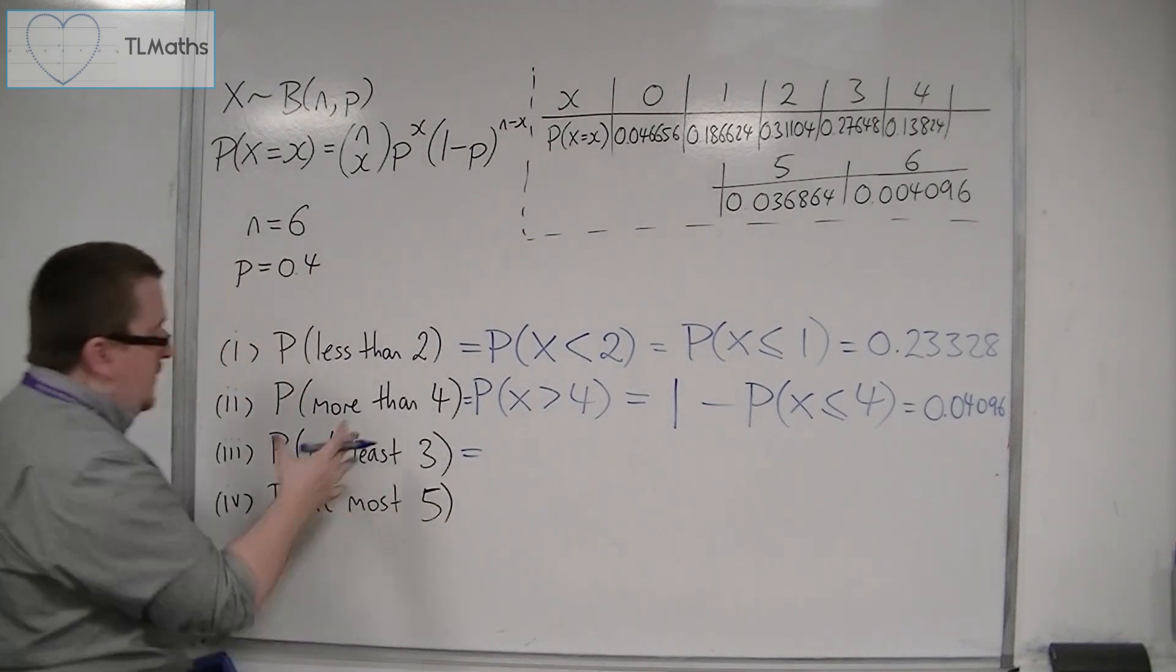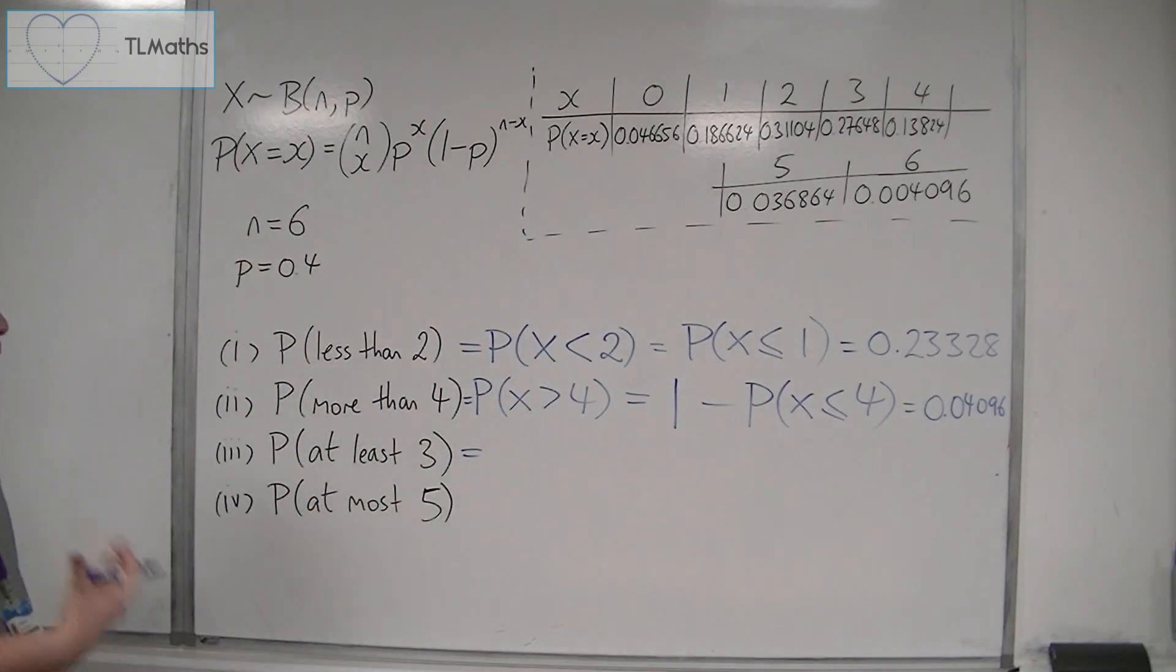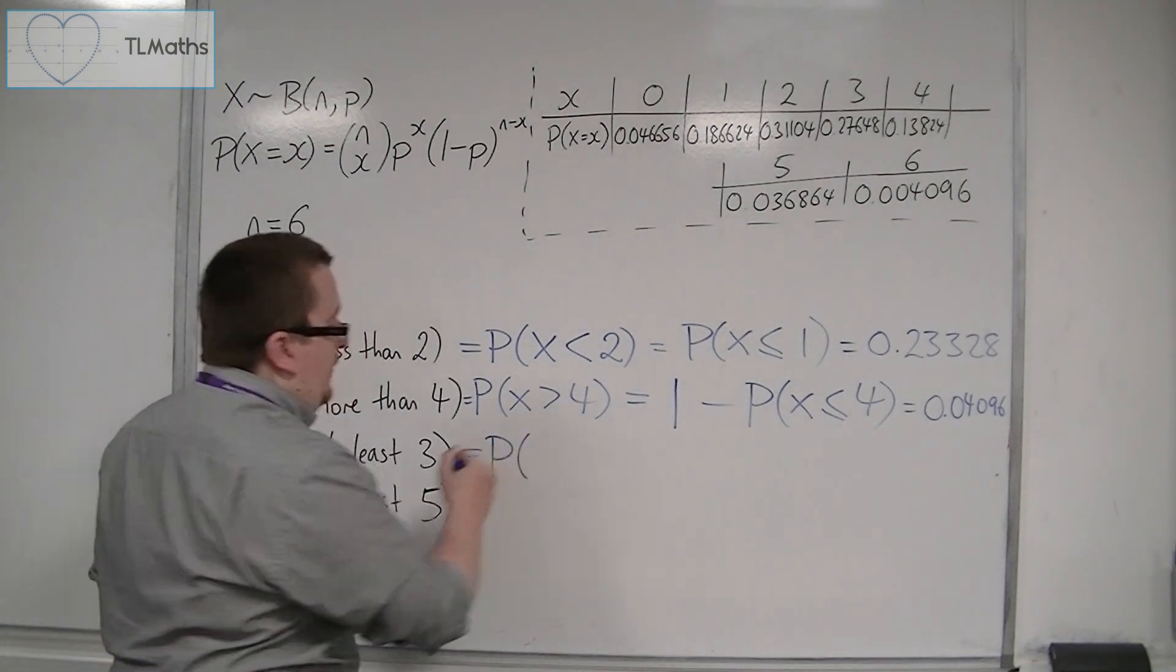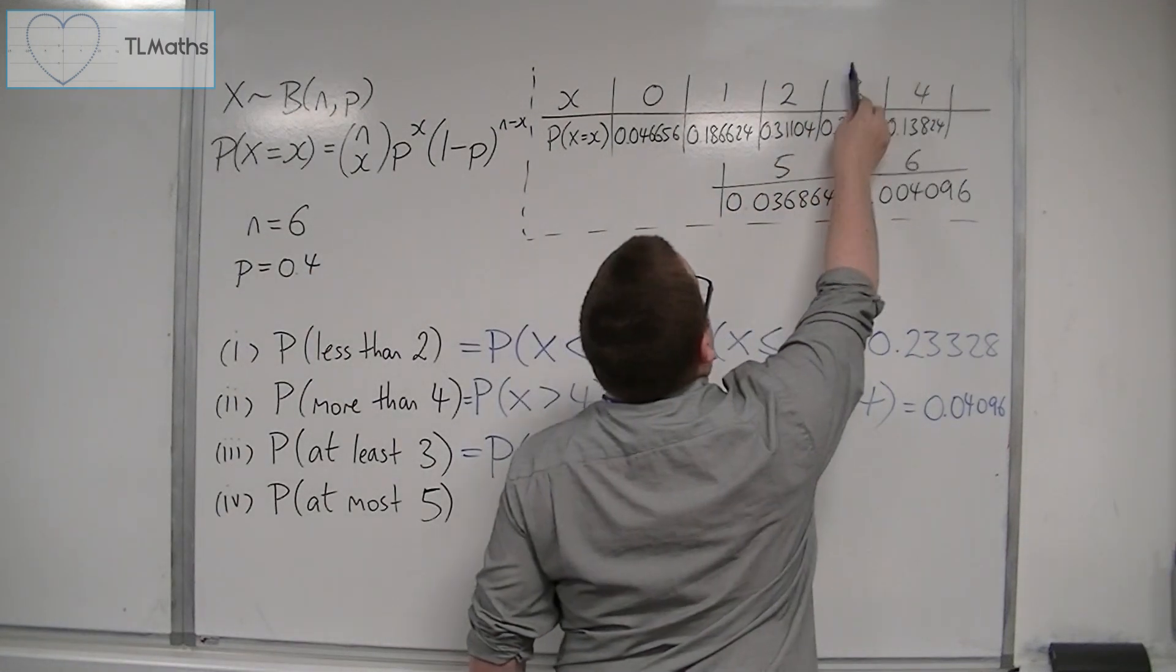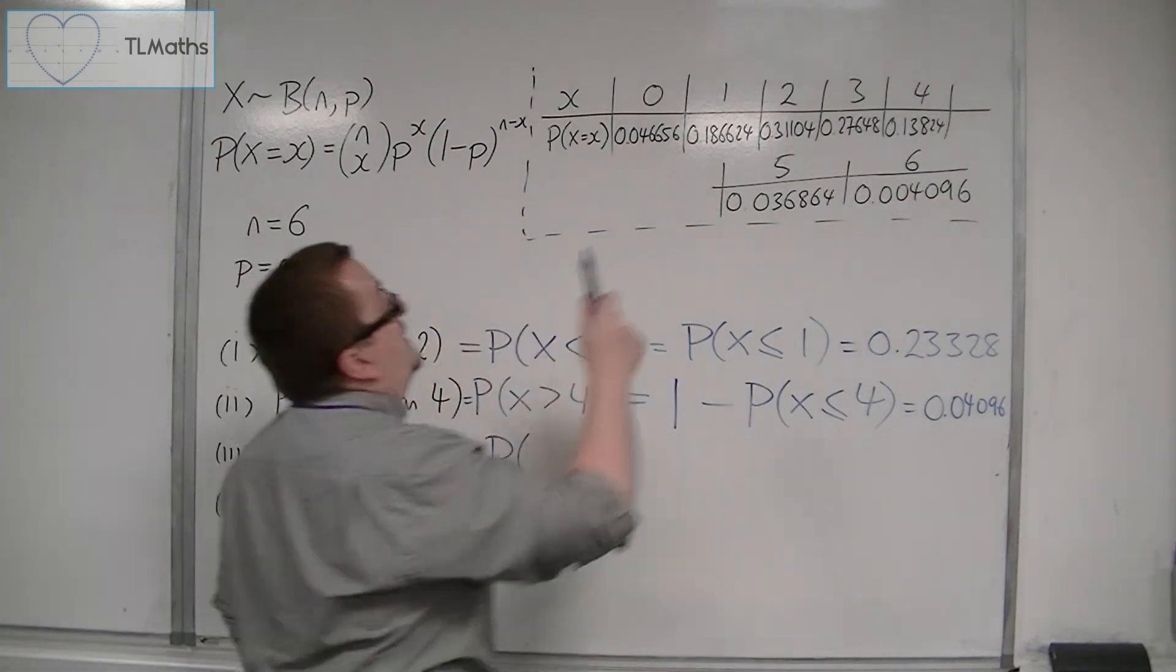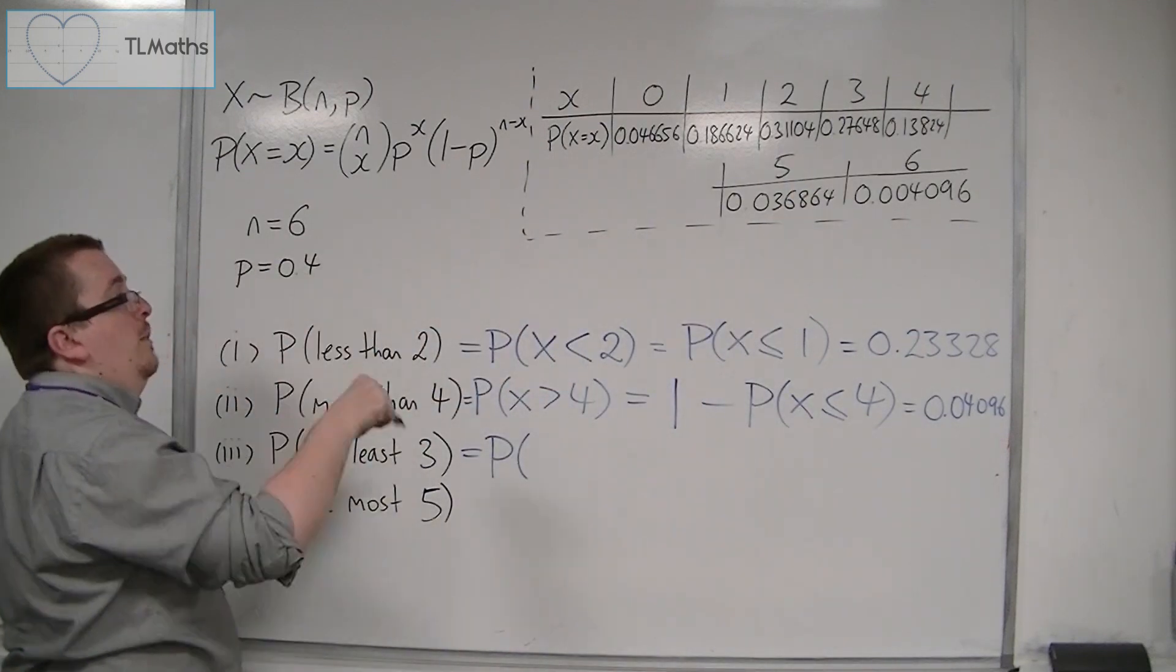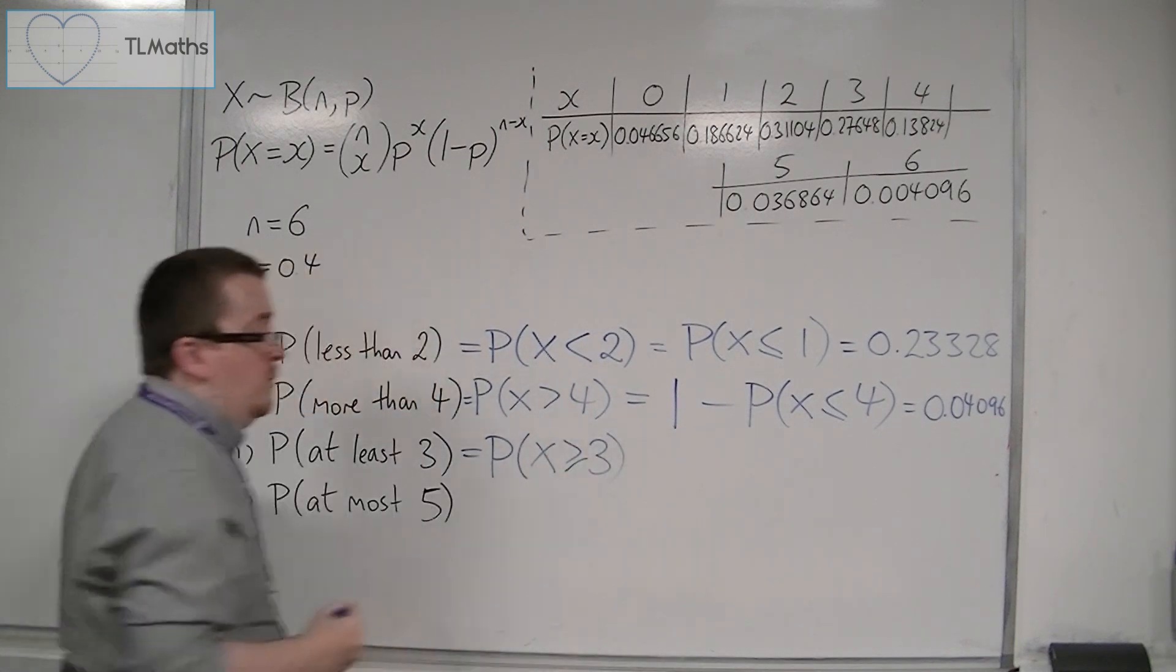Then we get on to these problems where we're talking about at least 3, or at most 5. If you were talking about at least 3, then we want at least 3, and then we can have 4, 5, or 6 as well. So we want nothing that is less than 3. So this is the probability of x being greater than or equal to 3.